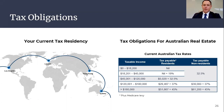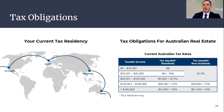As an Australian tax resident, your marginal tax rates are applied for all assessable worldwide income, including obviously for property, starting at the tax-free rate and increasing up to 45% plus Medicare levy.